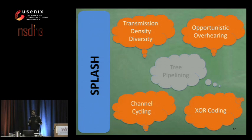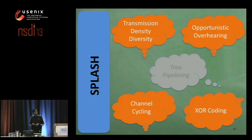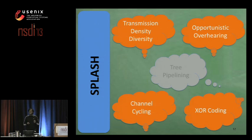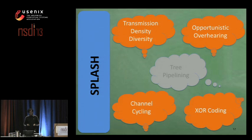While tree pipelining allows us to maximize transmission throughput, its reception reliability is much less than the required reliability of 100%. By 100% reliability, we mean that every node has to receive the entire disseminated program object, because partial programs are of no use. To achieve such high reliability, SPLASH uses four key techniques.